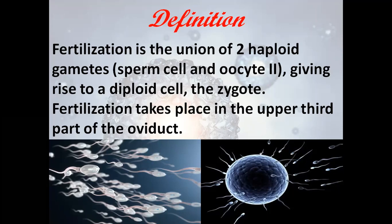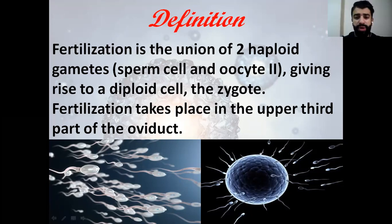Fertilization is the meeting of the sperm and the egg cell. It is the union of two haploid gametes, the sperm cell and the oocyte 2, which give rise to a diploid cell. This is the importance of fertilization: it restores the diploid state. The haploid gametes — the sperm cell and the oocyte 2 — unite to give a diploid cell called the zygote.